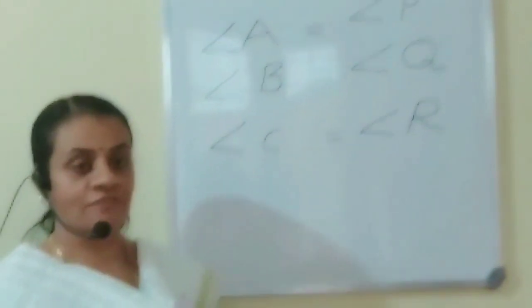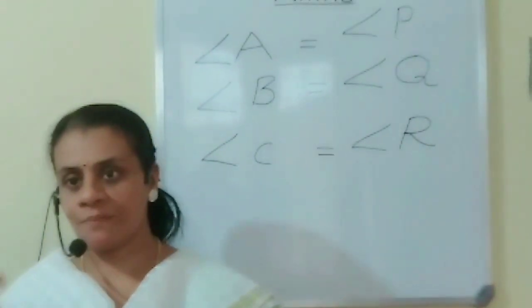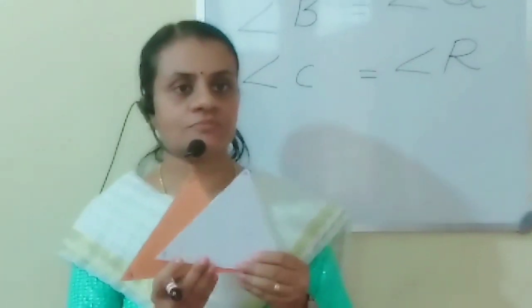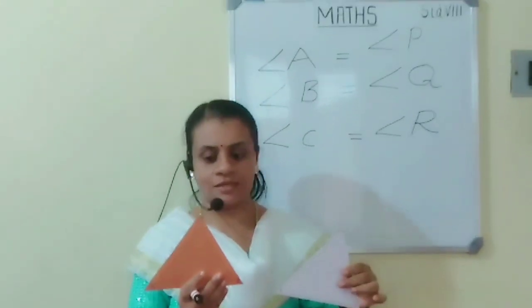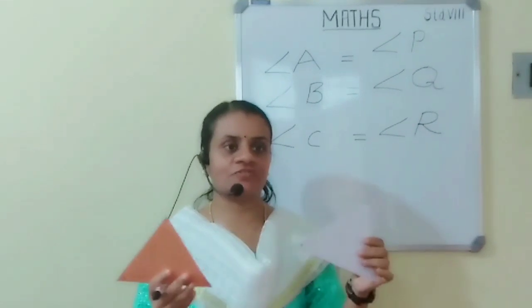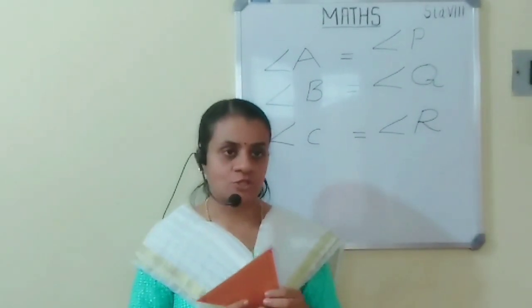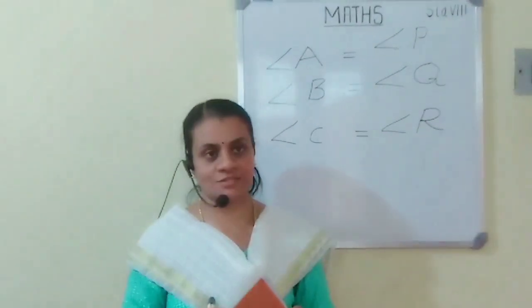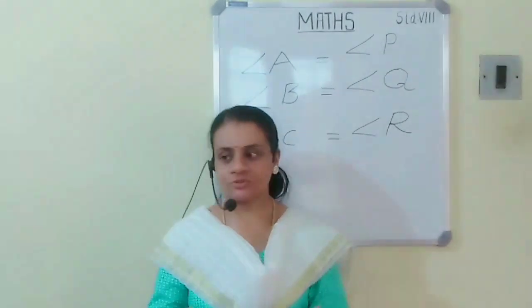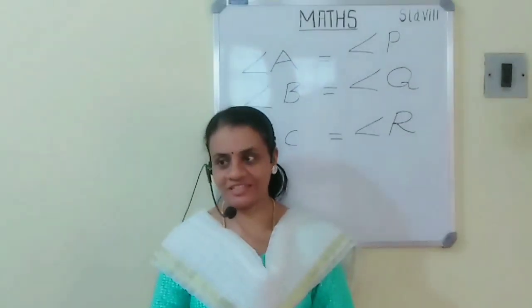Now you have written the matching sides and matching angles of these two triangles. If the three sides of triangle ABC are equal to the three sides of triangle PQR, then the angles of the triangles are also equal. Please do the following homework neatly and perfectly in your notebook.